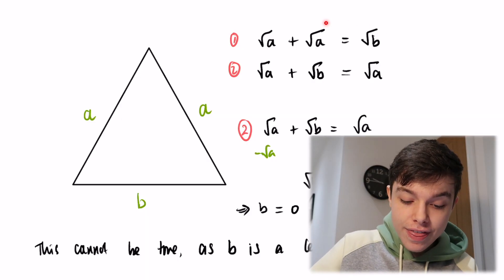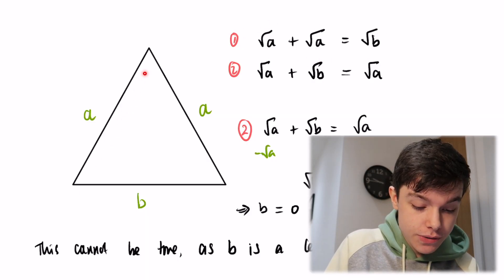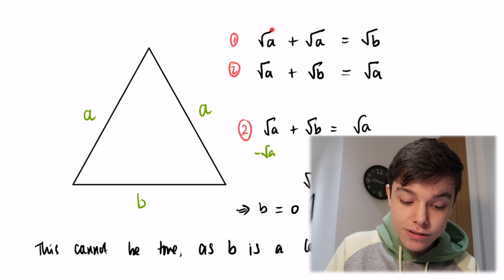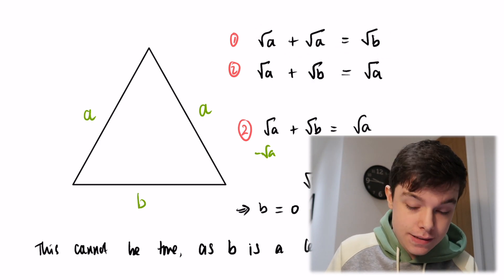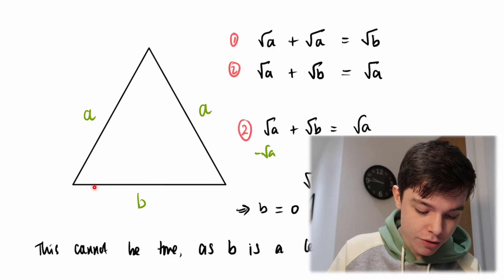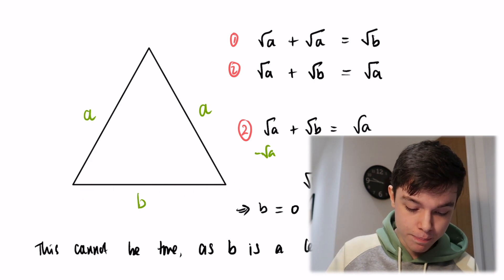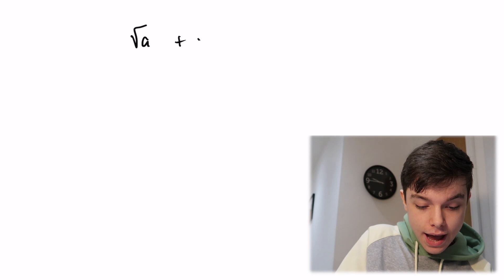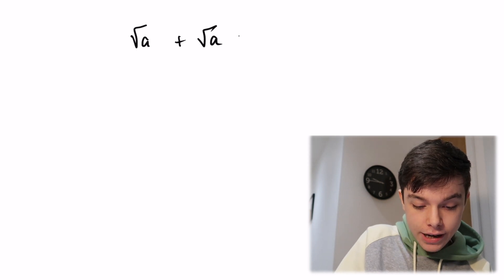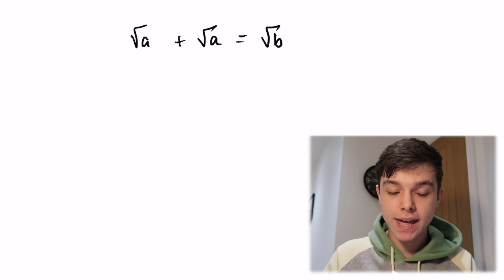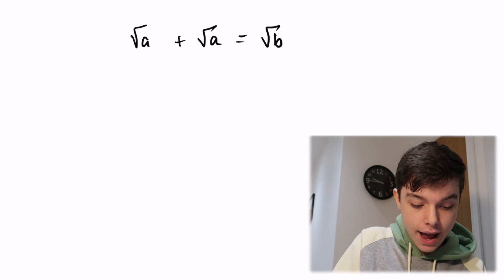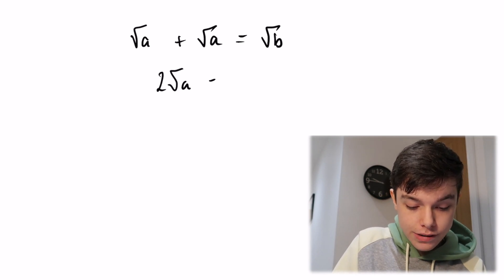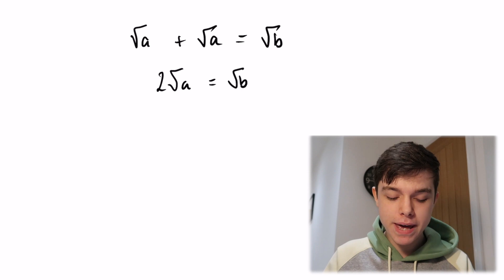Now let's look at Equation 1. These two sides are equal in length, so we square rooted them, added them together, and according to Homer we get the square root of B. The square root of A plus the square root of A — does that give us the square root of B? Well, on the left-hand side we can write: two times the square root of A equals the square root of B.